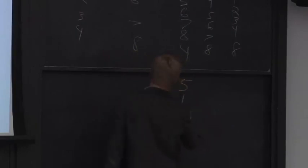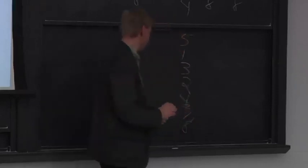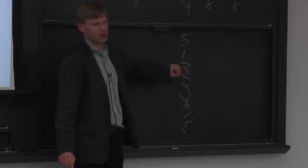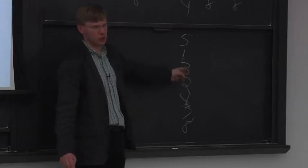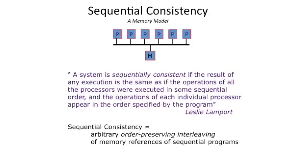What is not valid is something like 5, 1, 3, 2, 4, 7, 8, 6 — because we've reordered one of the individual address sequences; 2 and 3 should be ordered. So the basic idea is that it's an arbitrary order-preserving interleaving: each processor's instructions are preserved in order, but they can be interleaved between different threads arbitrarily.